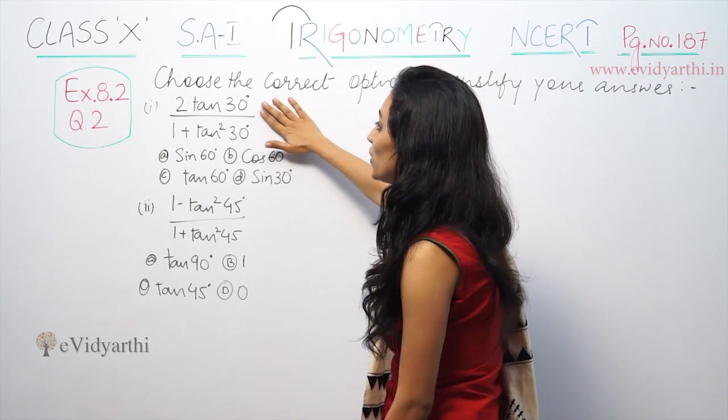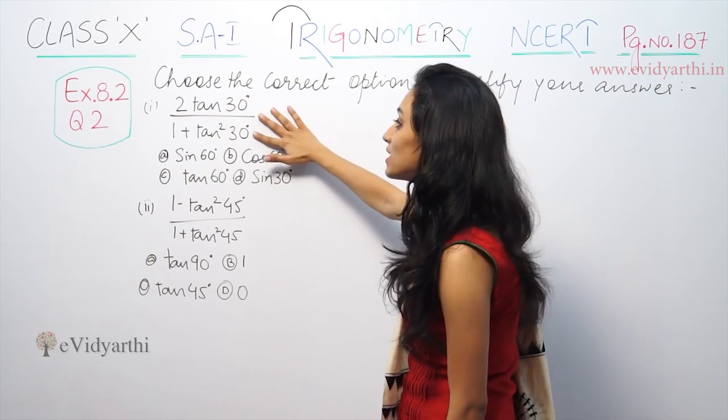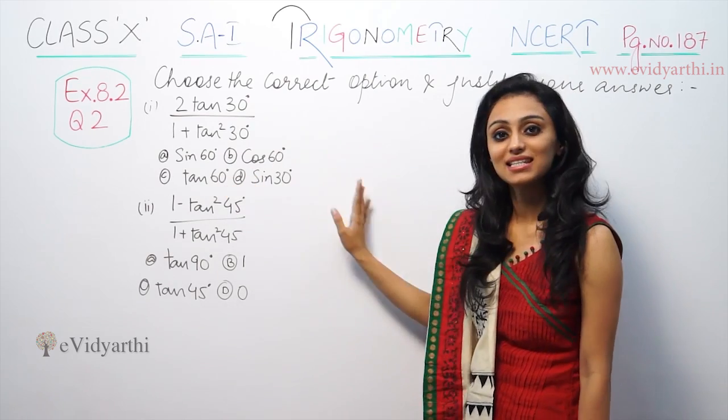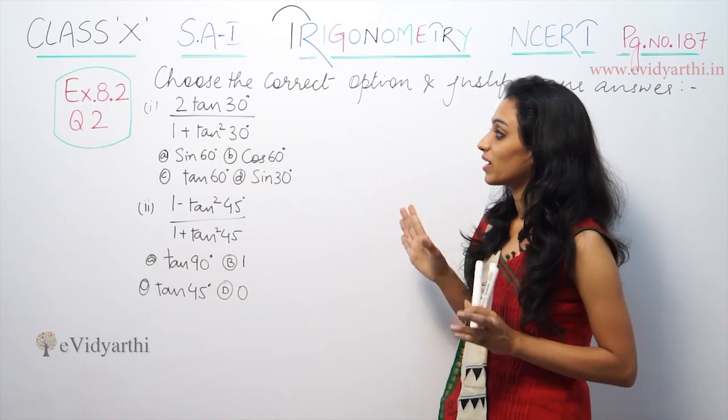The question is: 2 tan 30 degrees upon 1 plus tan squared 30 degrees. Options are sin 60, cos 60, tan 60, and sin 30. You can choose the correct option.